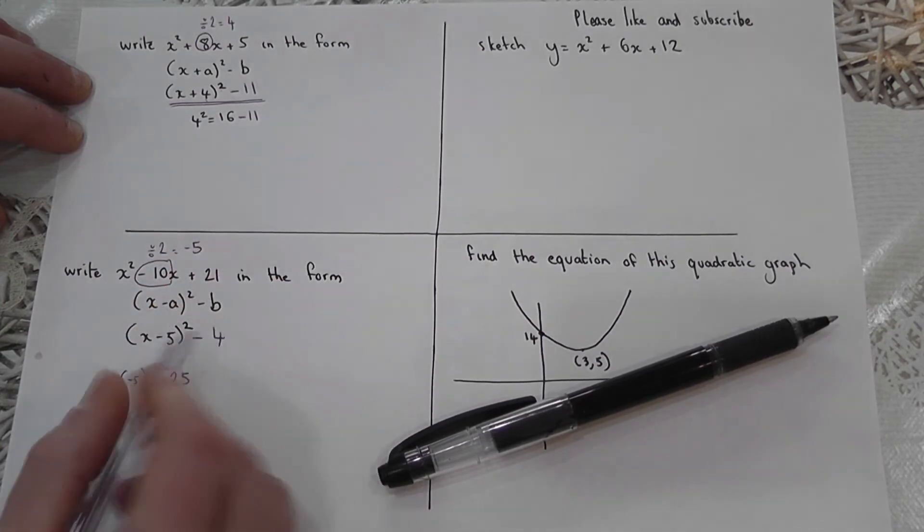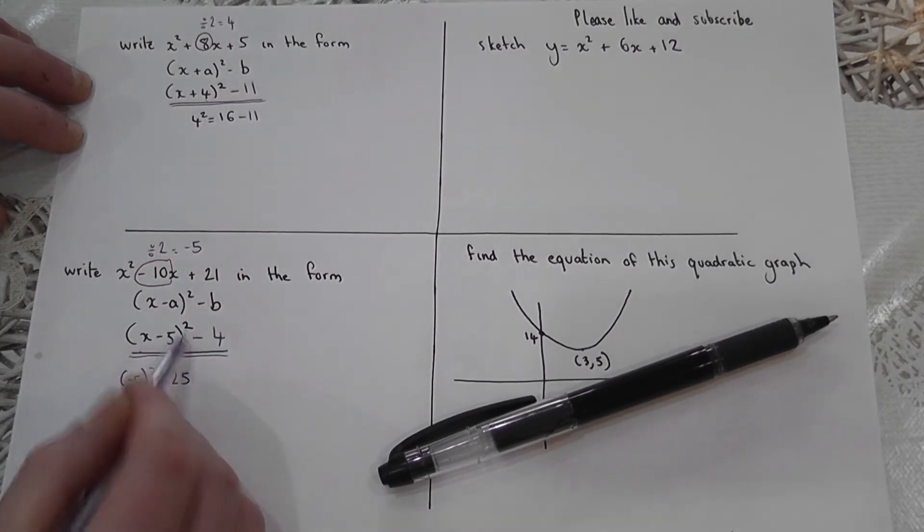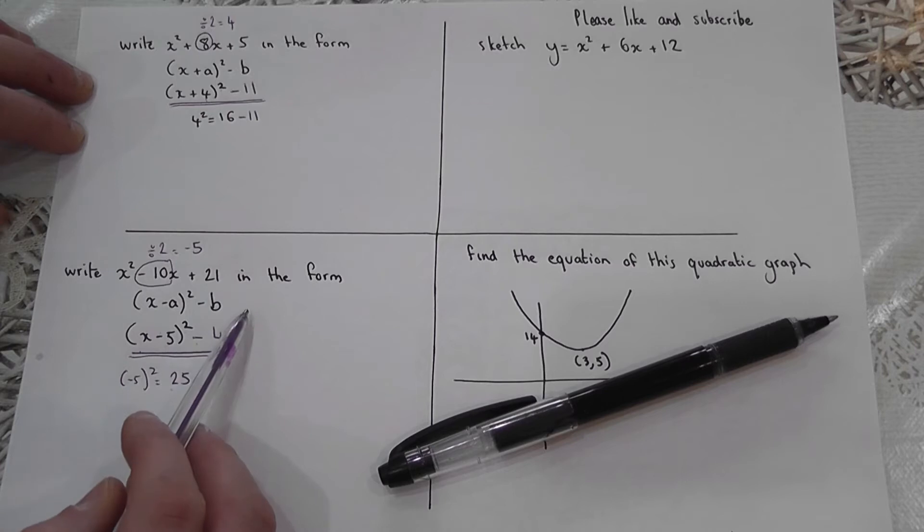Because 25 take away four is 21. So when we complete the square, we get x minus five squared, take away four. That reviews the main skill concisely.